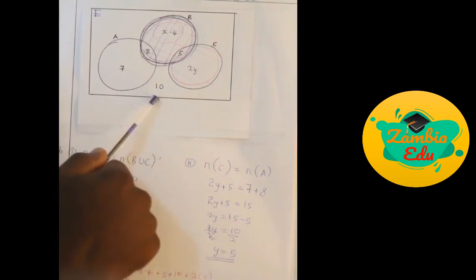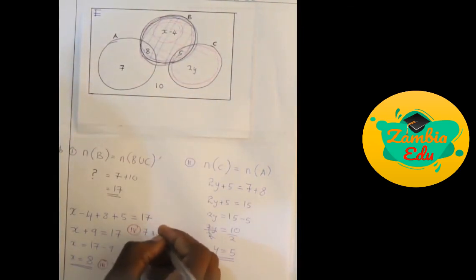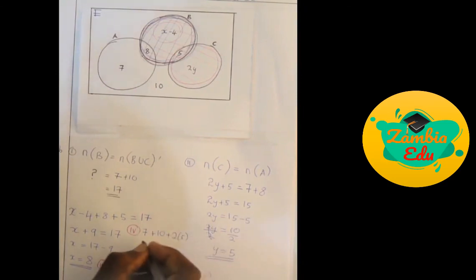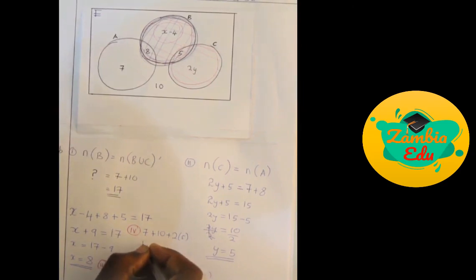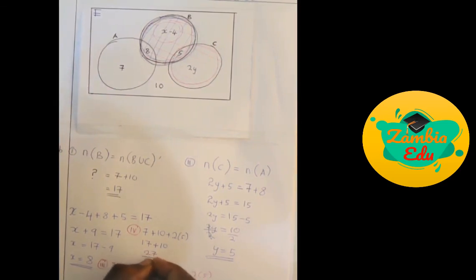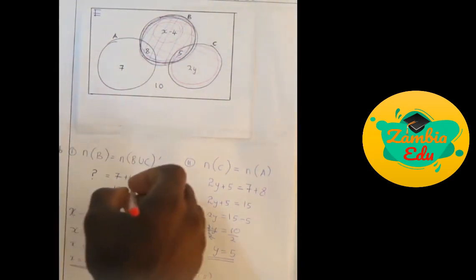B complement consists of: 7 plus 10 plus 2y, substituting y equals 5: 7 plus 10 plus (2 times 5) equals 7 plus 10 plus 10 equals 27. So B complement has 27 elements.